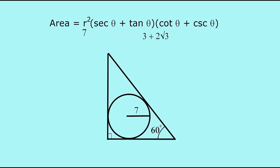We'll then square the radius. 7² is 49, and 49 times (3 + 2√3) is 147 + 98√3. So that's the area of the triangle.